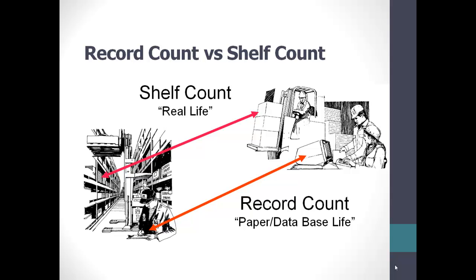Every item you stock exists in two separate worlds. First, inventory exists as a tangible, physical item actually kept within the facility — that's an item's real life, or shelf count. However, all of your items also exist in an intangible form within the company records — that's its paper life, or record count. Often, an item's paper life is more important than its real life. If someone asked if you had 27 widgets in stock, you wouldn't go to the stock room — you'd look at the records. Since purchasing, sales, customer service, and production planning decisions are based on whether an item is shown as in-house, an item's paper life can be just as important as its real life.